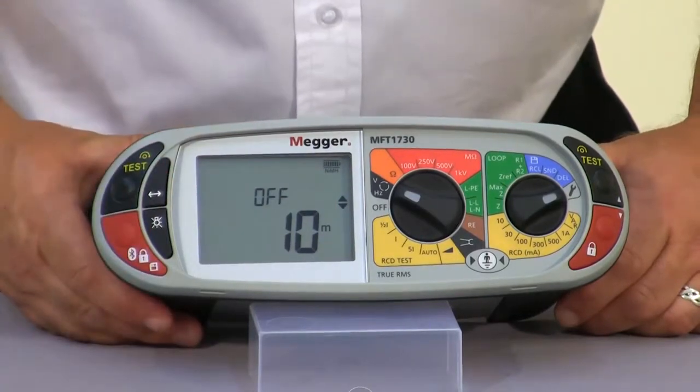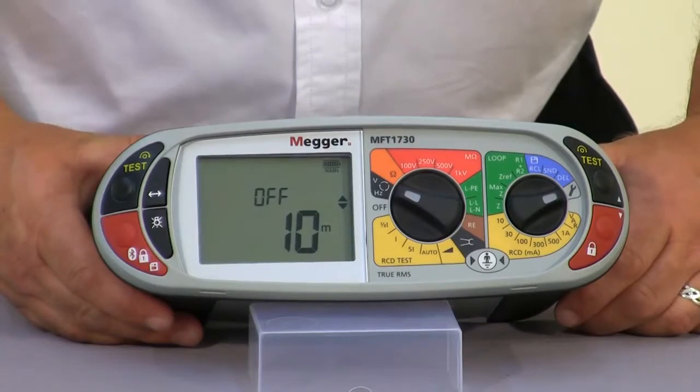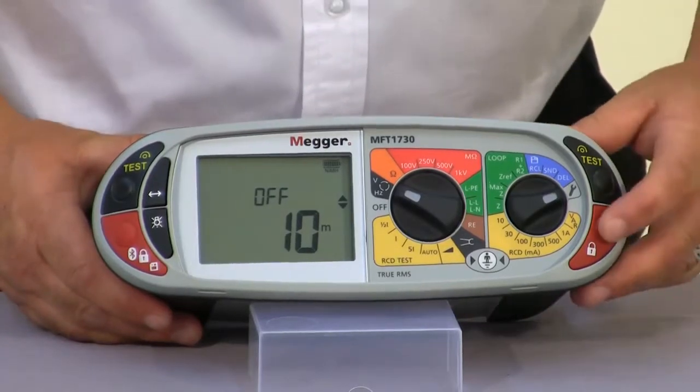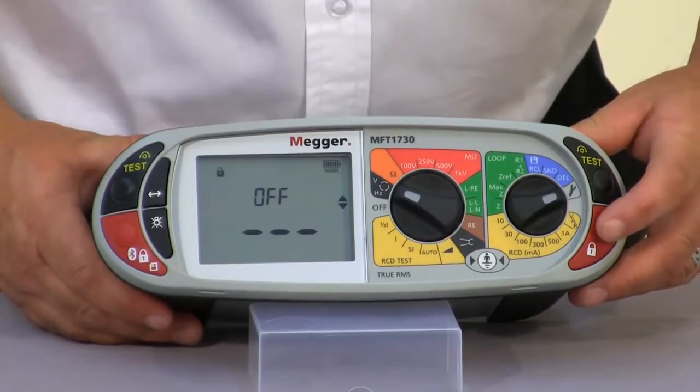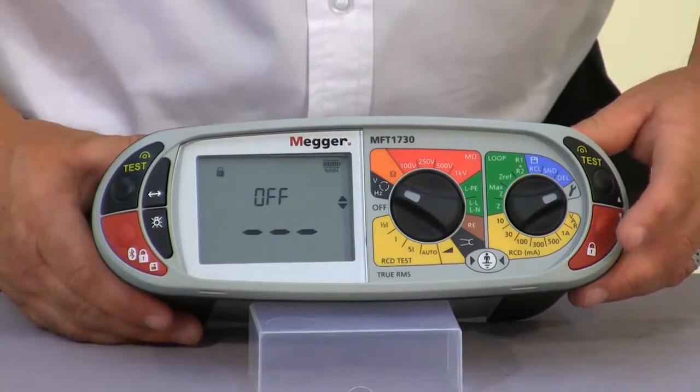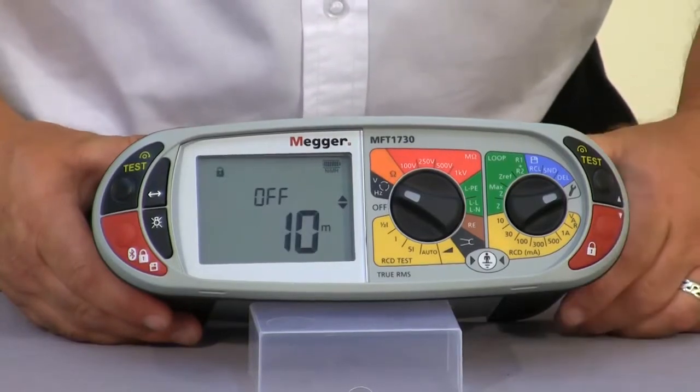The off is the auto-off facility. So if the unit is left unattended, we can select either two minutes, we can turn it off altogether so the unit will remain on until the battery discharges, or we can set it to 10 minutes.